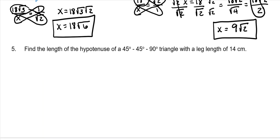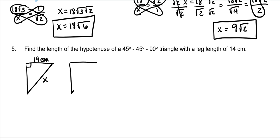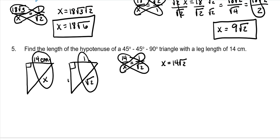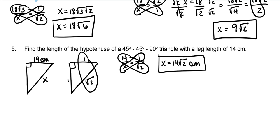Find the length of the hypotenuse of a 45-45-90 triangle with a leg length of 14 centimeters. Draw your formula triangle — the hypotenuse is always the square root of 2, everything else is 1. Set up your ratios: 14 over x equals 1 over the square root of 2. Cross multiply: x equals 14 square roots of 2 centimeters. For pattern people, to go from leg to hypotenuse, you multiply times the square root of 2 — so 14 square roots of 2.